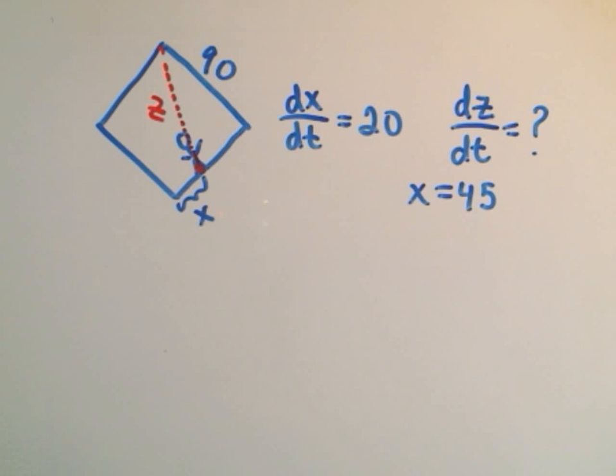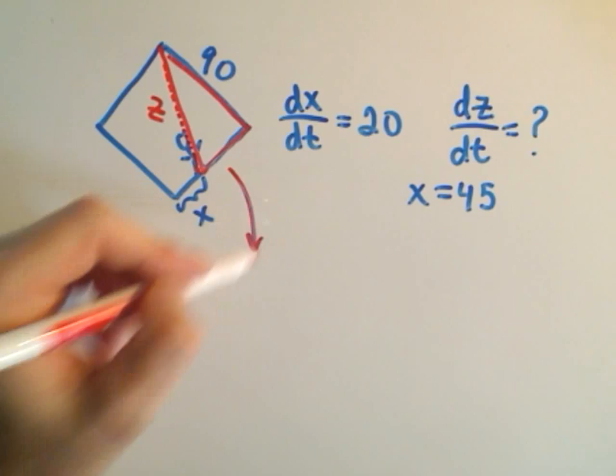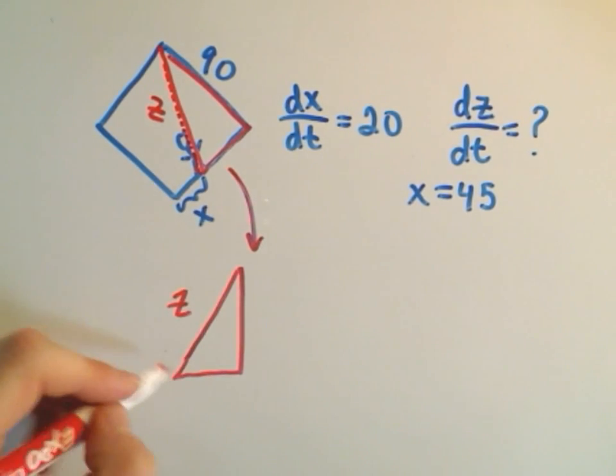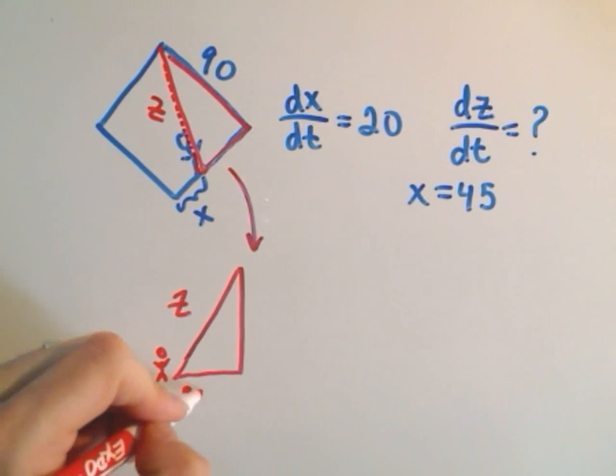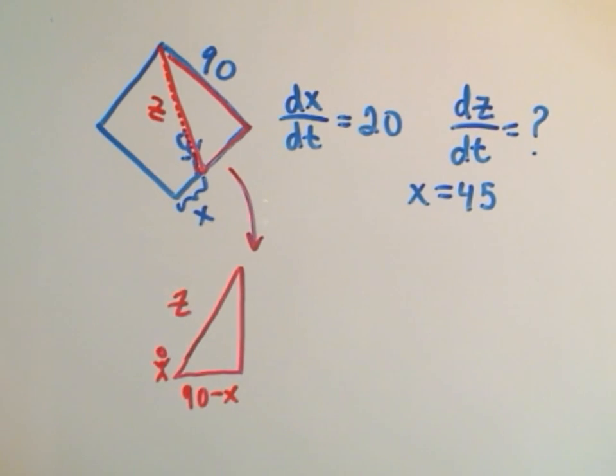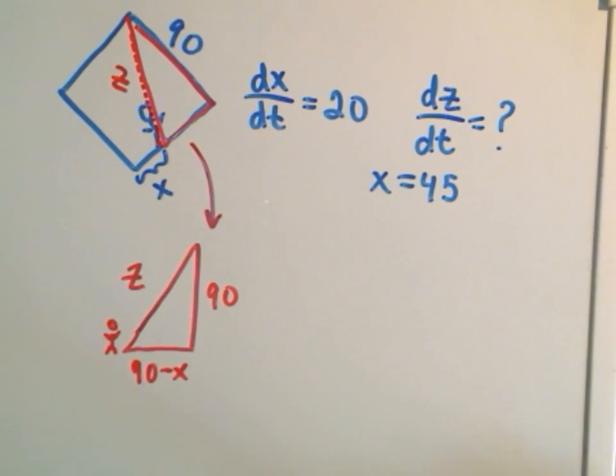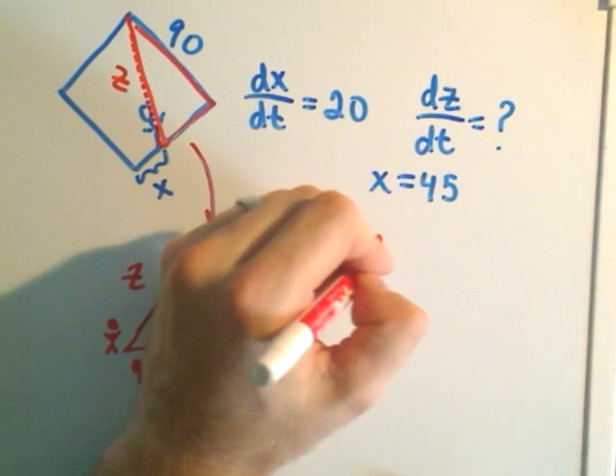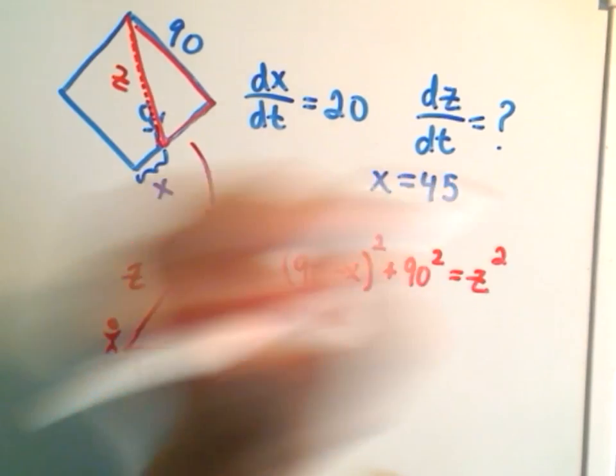So we still have to come up with a nice little equation to take the derivative of. But notice if I look at this triangle inside of here, if I kind of pull it out. Okay, so this is our length Z. So here's our guy down here at second base. If he's already went X units, that means the remainder is 90 minus X. This other side stays fixed at 90. So by the Pythagorean theorem, we'll simply get that 90 minus X squared plus 90 squared equals Z squared.